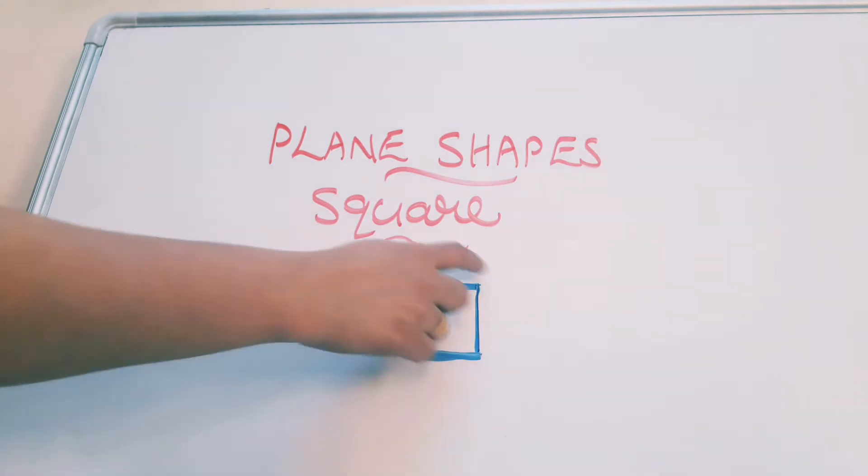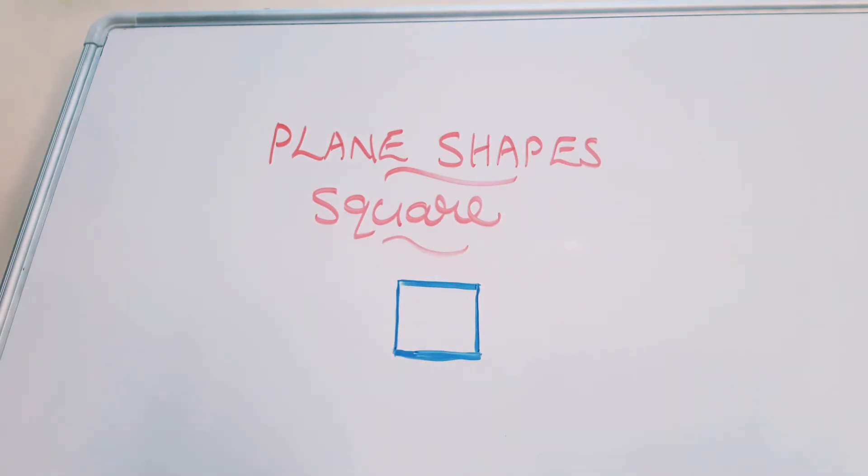In squares all the four sides are equal in length. In rectangle we said opposite sides are equal in length. Here all the four sides are equal in length.